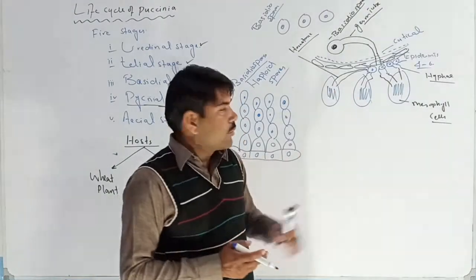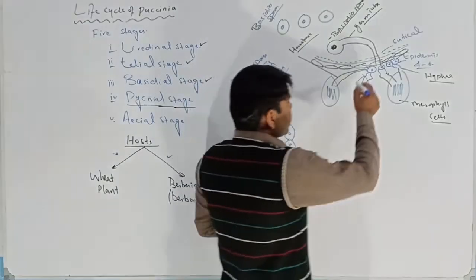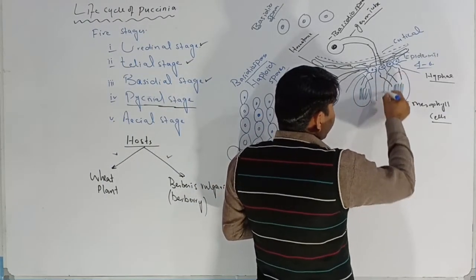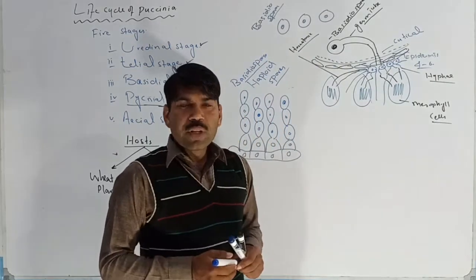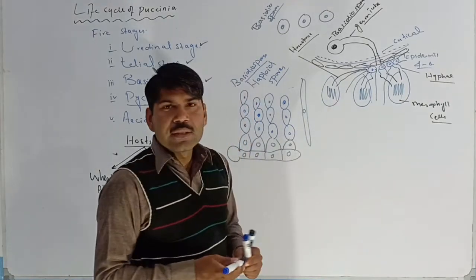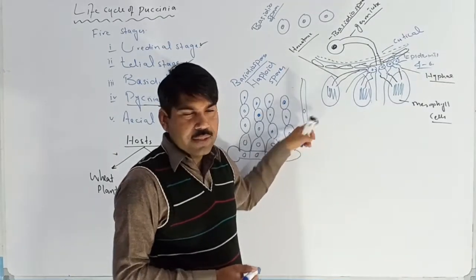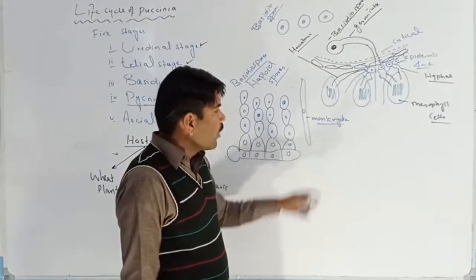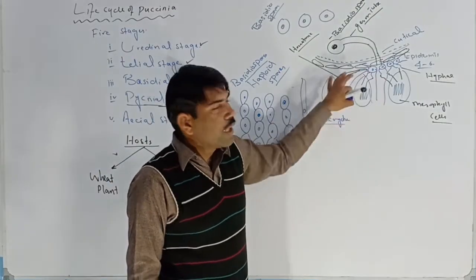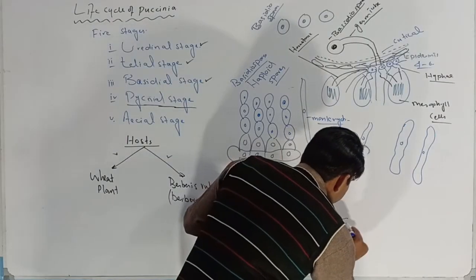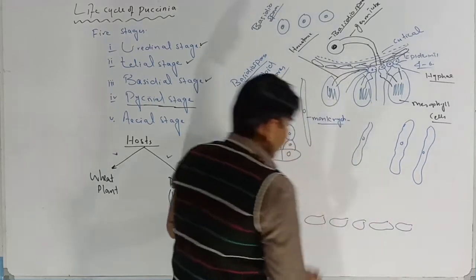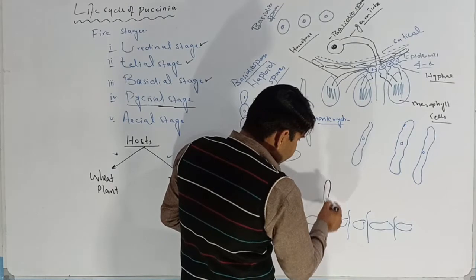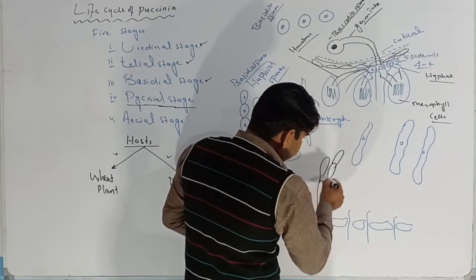The haustoria penetrate the mesophyll cells and absorb their food content. The hyphae giving rise to these haustoria are monokaryotic — meaning each hypha contains a single nucleus. Due to the presence of a single nucleus, they are known as monokaryotic hyphae. All the hyphae with haustoria are monokaryotic hyphae, and they grow in all directions within the leaf.